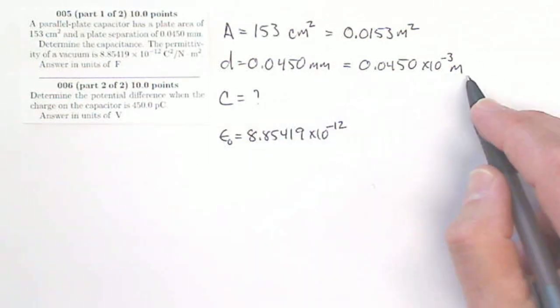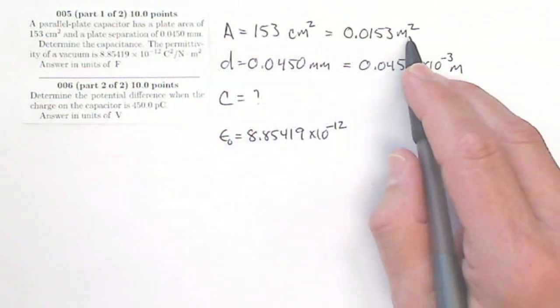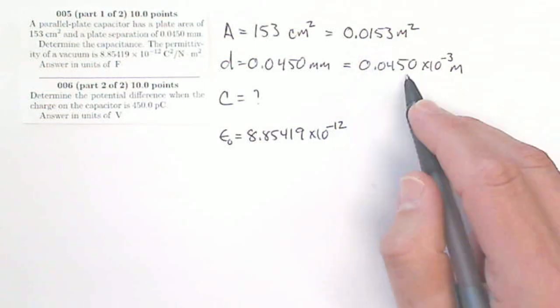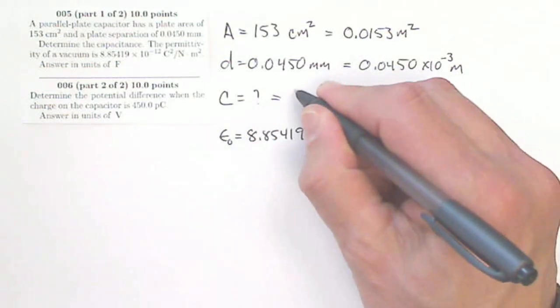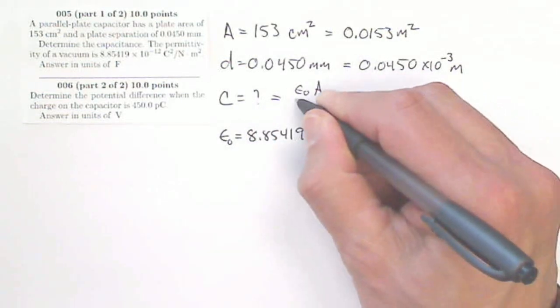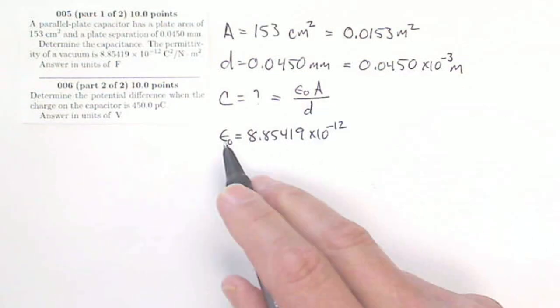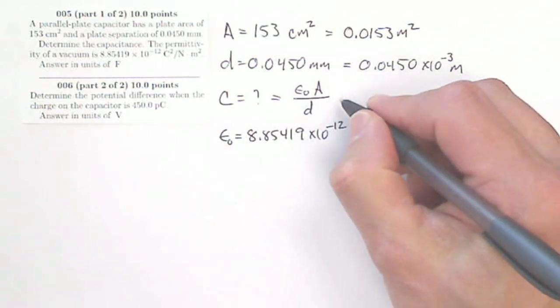This would now be in standard units. This would be now in standard units. Make sure you convert those correctly. So my capacitance is going to be epsilon naught A over D, and you know all of these, so you can get yourself your capacitance.